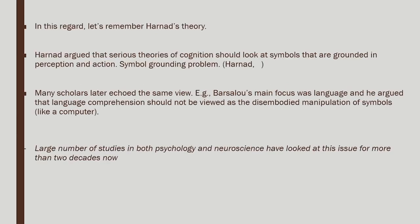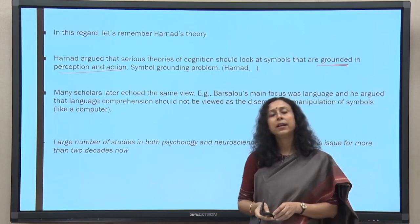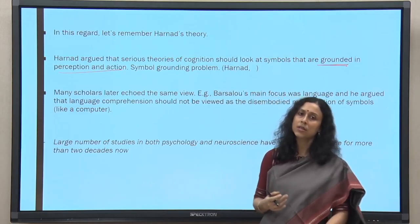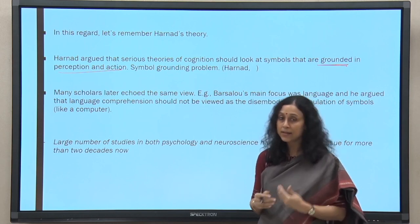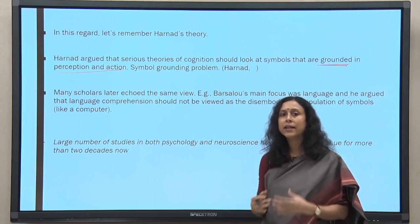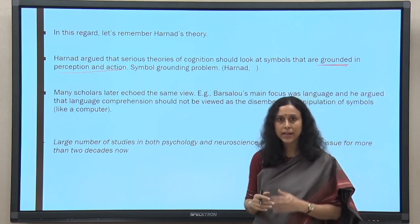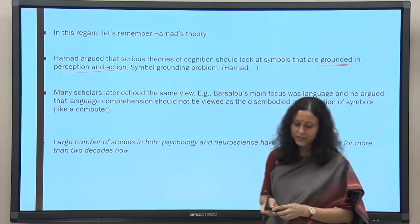In this regard, we have already discussed Harnad's theory about the symbol grounding problem. Harnad argued that serious theories of cognition should look at symbols that are grounded in perception and action — that is the symbol grounding problem. Any good theory of cognition needs to take into account the grounding, the rootedness of those experiences. Experiences and their understandings cannot be devoid of the real experience, of the grounding in reality.